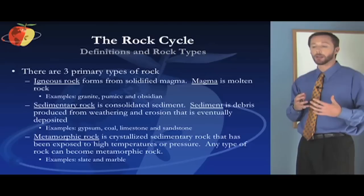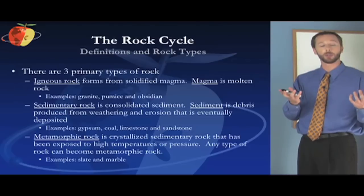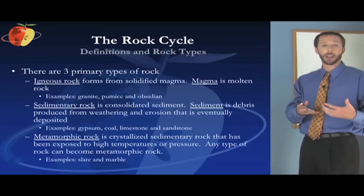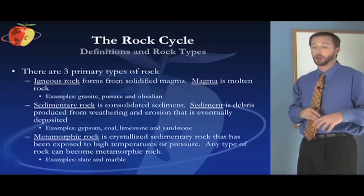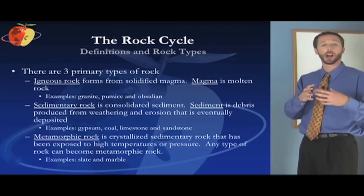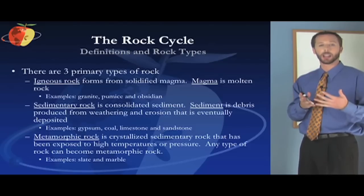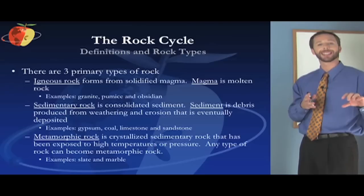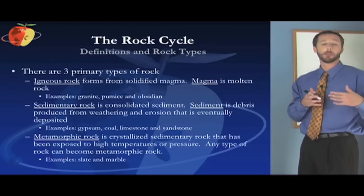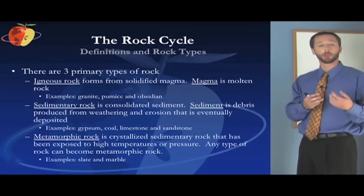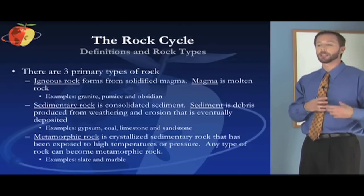Metamorphic rock could then get so hot that it melts and becomes igneous rock, coming out from a volcano or hardening again underground as an intrusive igneous rock. So all these rock types can become the other types. Metamorphic rock can also get exposed from deep underground via erosion — for example, in the Grand Canyon, the deep layer called schist has been exposed by the Colorado River eroding that deep canyon. Now exposed to weathering, it gets broken apart into little particles and becomes sedimentary rock. All of these can get turned into the other types — hence the rock cycle.